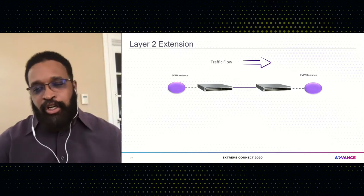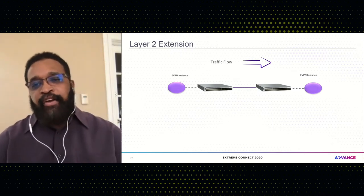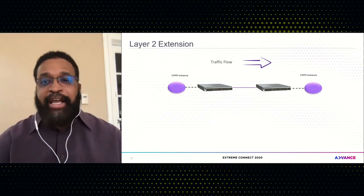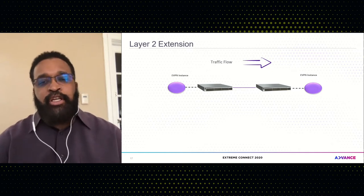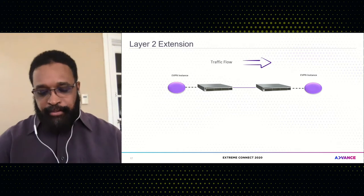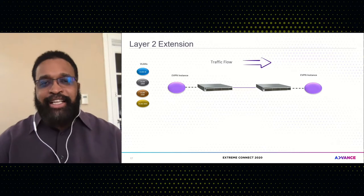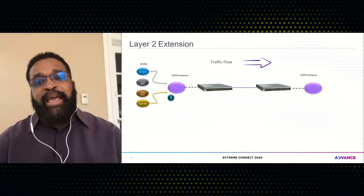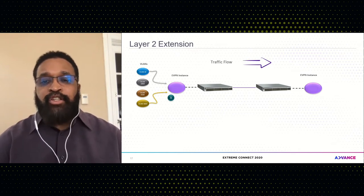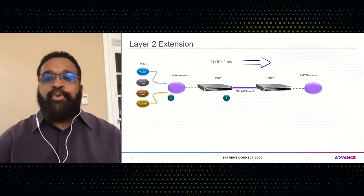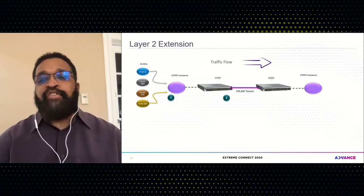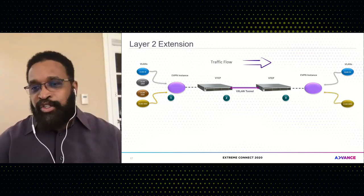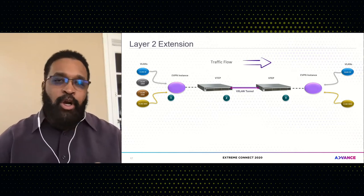Let's look at how L2 extension occurs across the IP fabric. Looking at traffic flow from left to right, two leaf switches in different racks need to communicate. Each leaf has an EVPN instance configured. VLANs are mapped to a VNI instance, which is mapped to the EVI instance. Traffic is sent to the local leaf, hits the virtual tunnel endpoint (VTEP), gets VXLAN-encapsulated, and sent across the tunnel to the destination leaf, where the VTEP de-encapsulates the traffic and delivers it to the VLAN. Return traffic follows the same process.